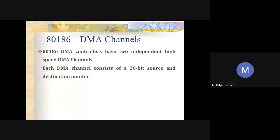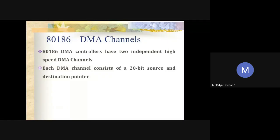Data can be transferred in 8-bit bytes or 16-bit words from any even or odd address. Each DMA channel in 80186 has a 20-bit source and destination pointer. The content of this pointer can be incremented or decremented depending on the data transfer: incremented by one for byte transfer, or by two for word transfer. Each data transfer takes two bus cycles — the first to fetch data and the second to store data.